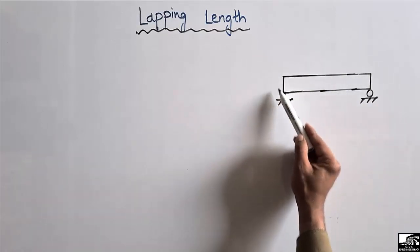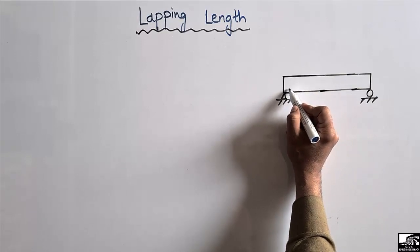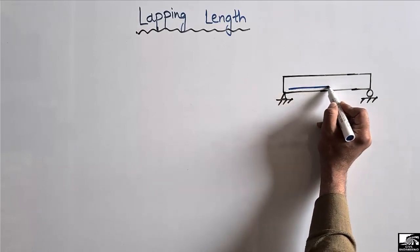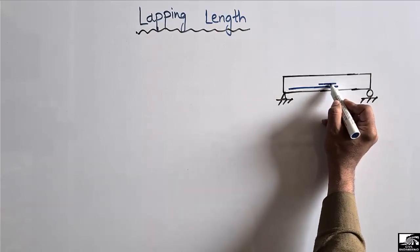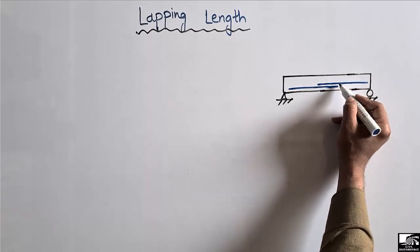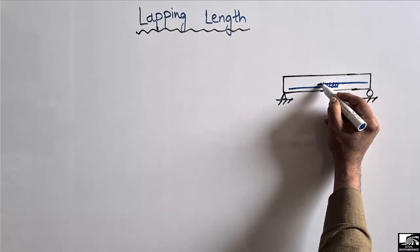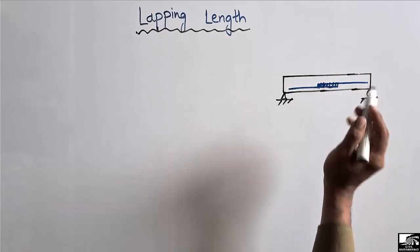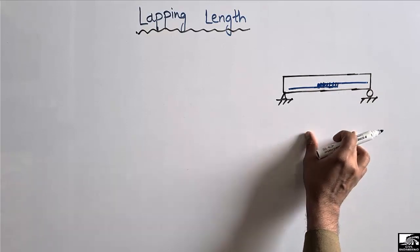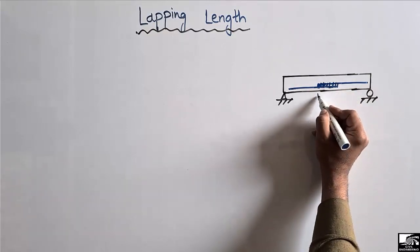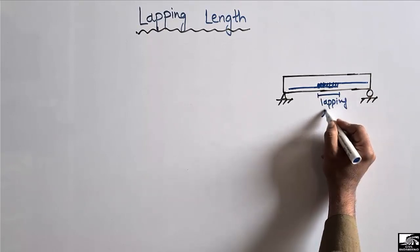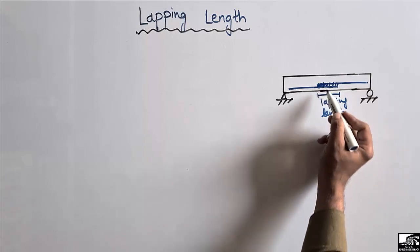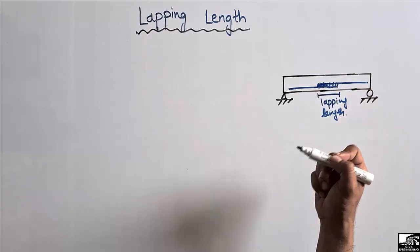To explain the lapping length, consider a simply supported beam. I place a steel bar at the bottom portion of the beam, and I want to connect it with another steel bar in order to carry the load. This connection between the two bars is known as the lapping of the steel bars, and the length of this lap is called the lapping length.